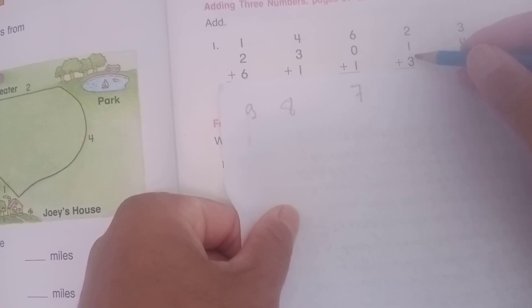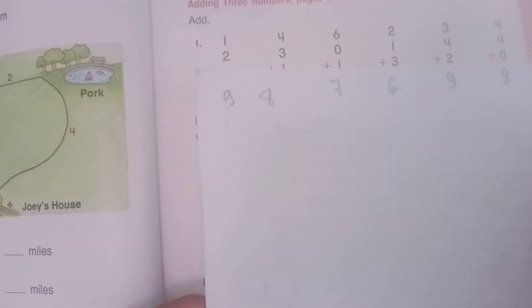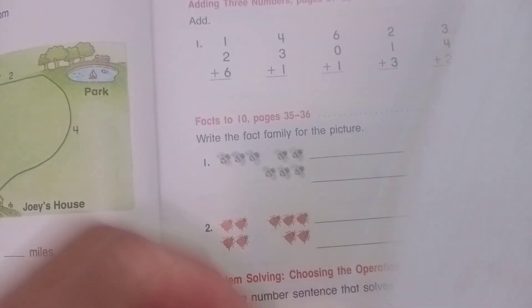And so now is 6+0=6, 6+1=7. And now continue is 2+1=3, 3+3=6. So you can see it continue is 3+4=7, 7+2=9.